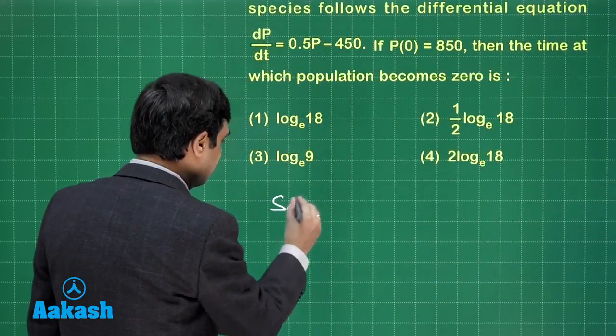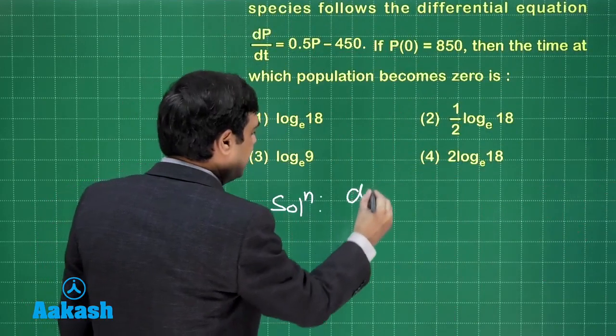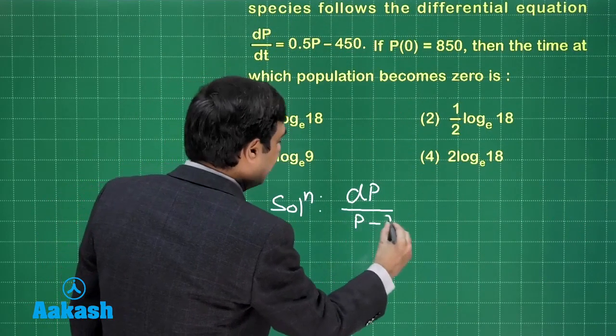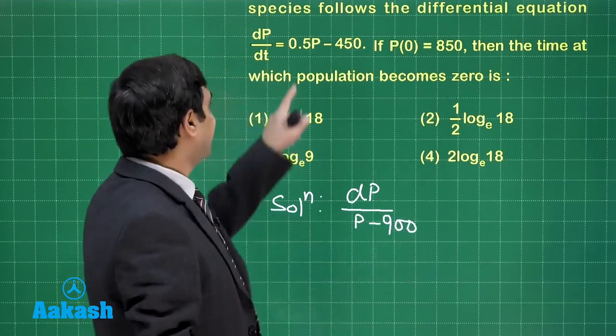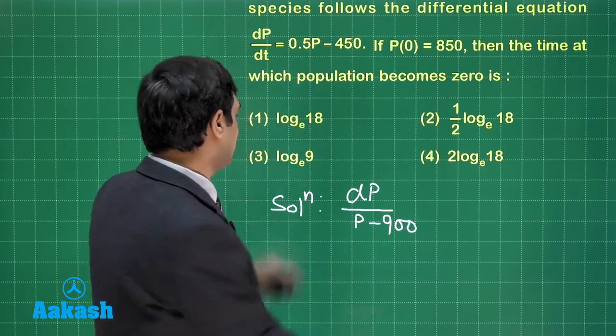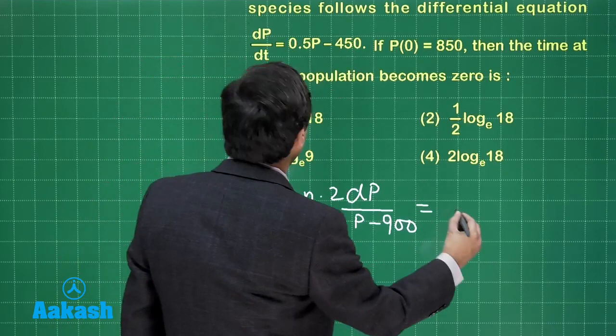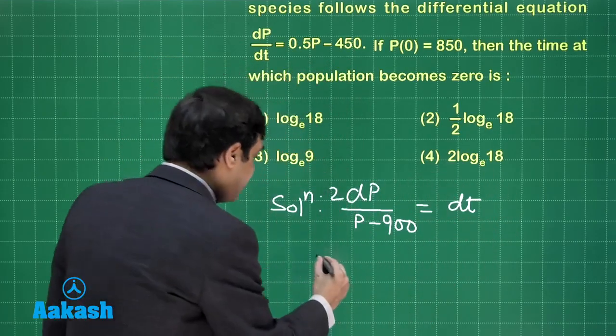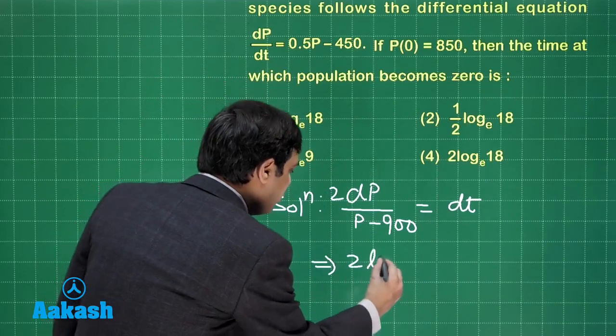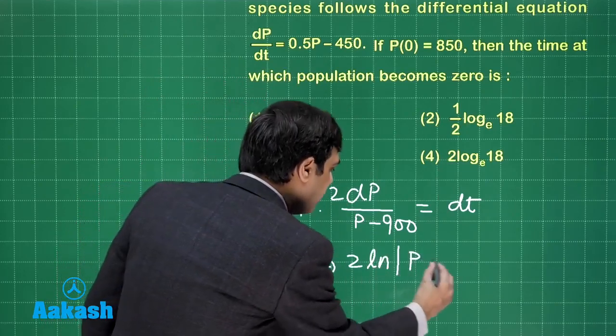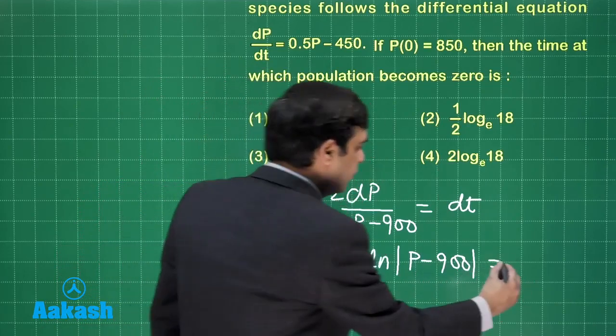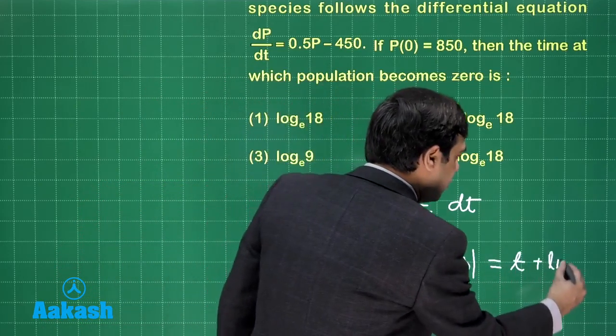So here it says dP divided by P minus 900, if I consider P by 2 take LCM so 2 is also multiplied here, this is equal to dt. Now integrating both sides we simply get 2 log mod P minus 900 is equal to t plus log c.